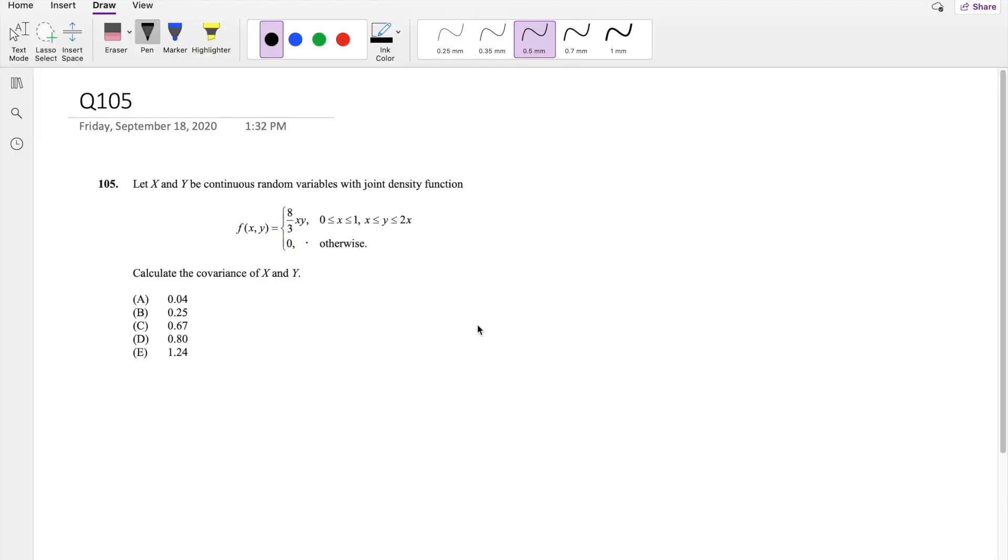In this video, I'll be going over question 105 on SOA Exam P. So pause the video real quick and try this problem yourself. Okay, let's just dive right in. So this problem isn't actually hard if you know the covariance of x and y. It's just pretty math intensive.